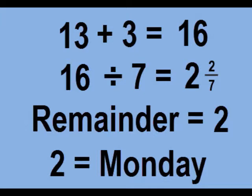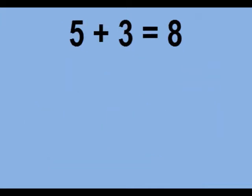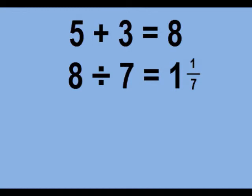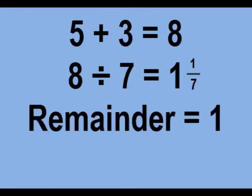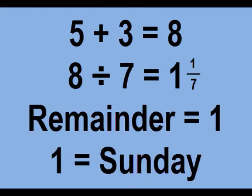Let's try one more. Again, we're going to take the date, let's say the fifth, plus three is eight. Divided by seven is one and one seventh. The remainder is one, it's a Sunday. The same formula each and every month, and now you know how it works.